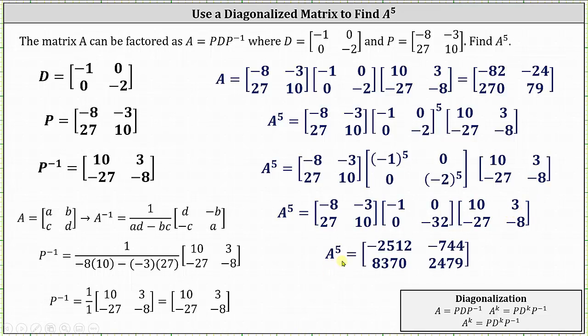A to the fifth is equal to the matrix with entries negative 2,512, negative 744, 8,370, and 2,479.